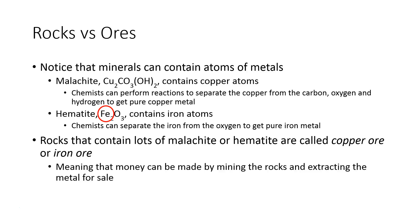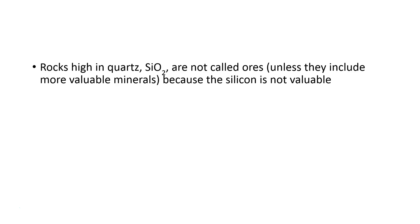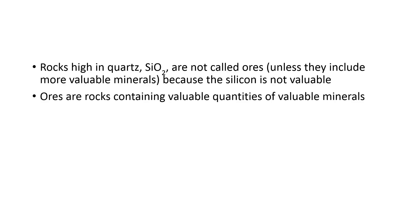This means that money can be made by mining these rocks and extracting the metal for later sale. Rocks that are really high in quartz are not usually called ores unless they include other more valuable minerals, and that's because silicon is not particularly valuable — it's really, really abundant. Quartz, and therefore the silicon that it contains, is one of the most abundant minerals that make up the rocks of the Earth's crust, so there's so much of it around that it's just not very valuable. That means that ores are rocks which contain valuable quantities of valuable minerals.